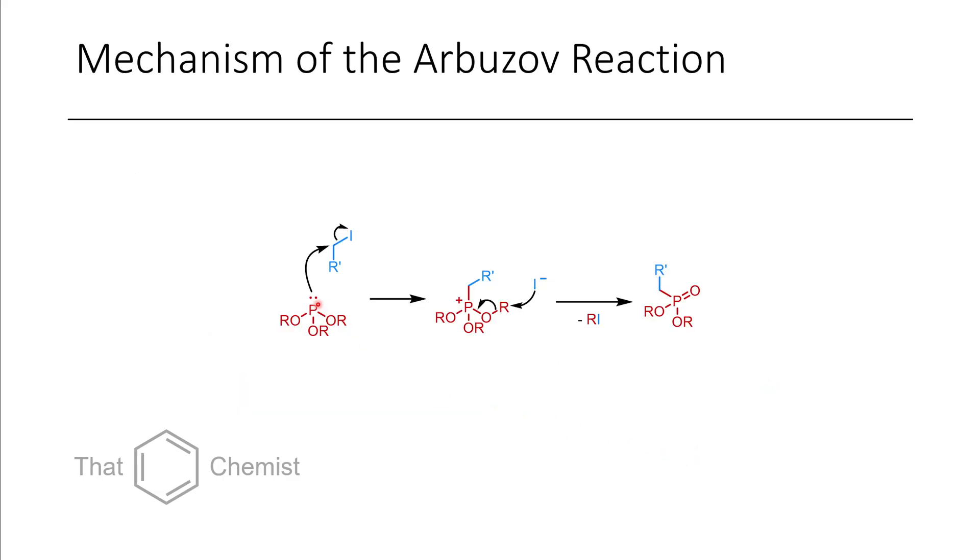Mechanistically speaking, here we can see the displacement of a primary alkyl iodide. The intermediate phosphonium is able to get attacked by iodide. The formation of this alkyl iodide byproduct then enables the synthesis of this phosphonate ester. So quite a straightforward reaction.